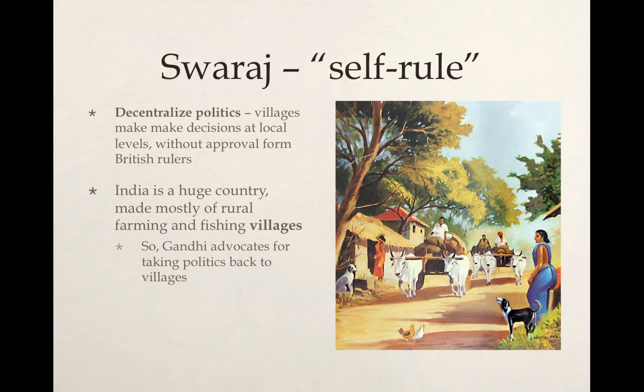Looking at the first one, Swaraj — what Gandhi advocated for was instead of Indian villages waiting for the British to make decisions, they would make decisions at a local level. This involved everything from criminal law to determining policies based on the agriculture in the area, and making voting decisions at a local level rather than waiting for the British. This involved basically most Indian villages developing their own local government systems.